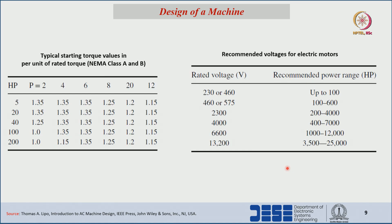Typical starting torque values per unit with respect to rated torque for NEMA class A and class B, for different poles and different HP ratings, can be found in the standards. These numbers are taken from NEMA, IEEE, or IEC standards. Recommended voltage ratings for electrical machines range up to 13 kV, with HP ratings up to 25,000 HP, including 230 V, 460 V, 2300 V, 4 kV, 6.6 kV, and 13 kV.